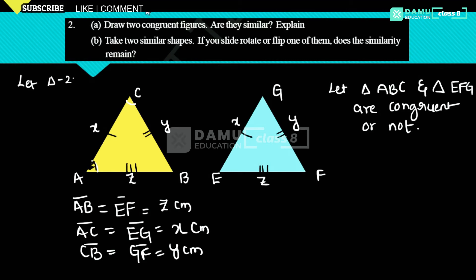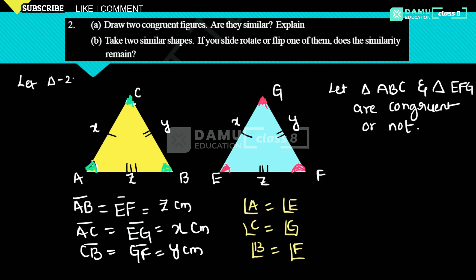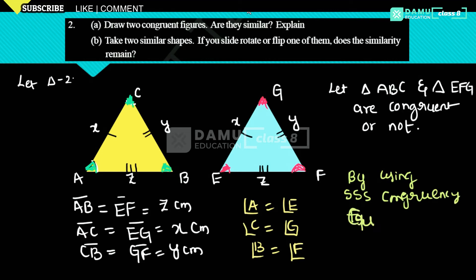Comparing all the angles: angle A equals angle E, angle C equals angle G, and angle B equals angle F. By using SSS congruency criterion, we can conclude the triangles are congruent.